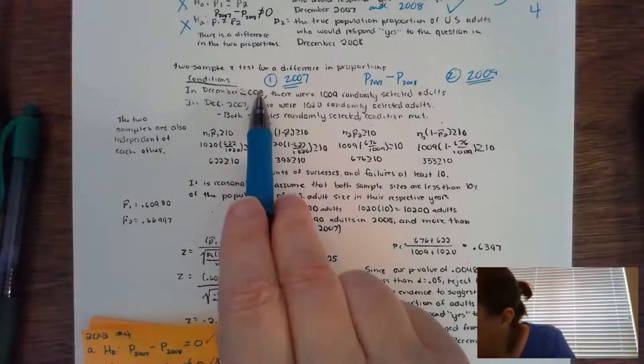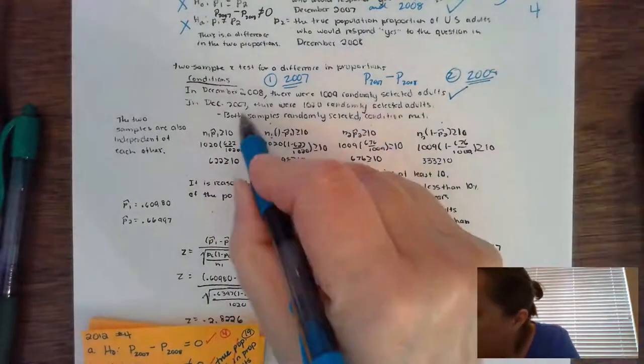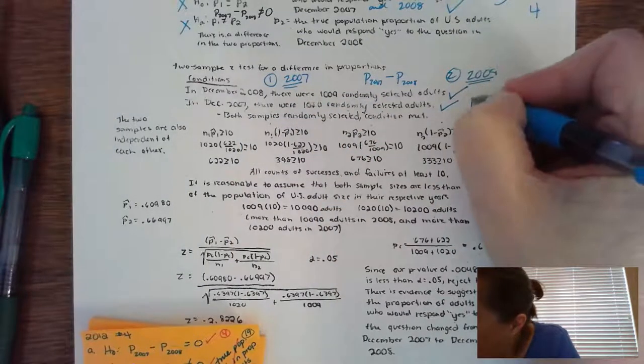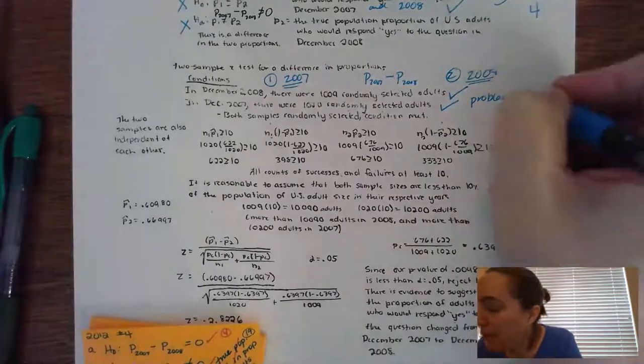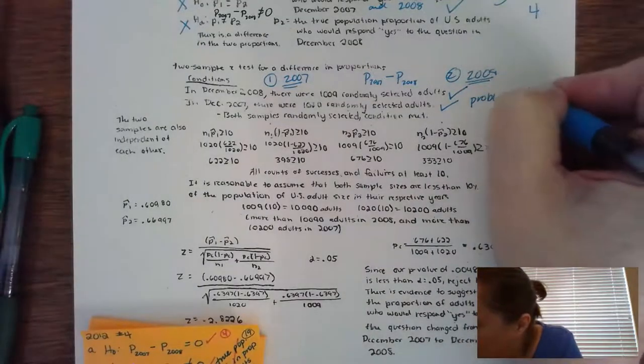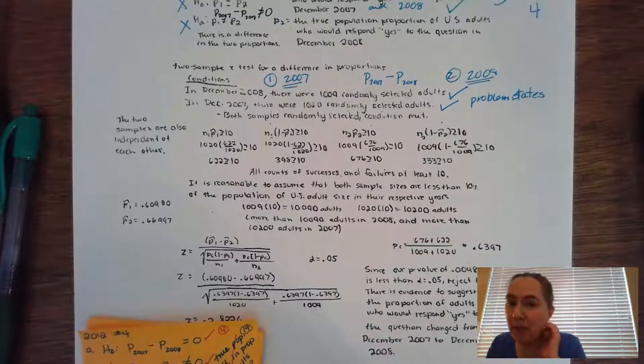So it says in 2008, randomly selected adults, check. 2007, randomly selected adults. I would write down the problem states that the adults were selected randomly, just to make sure it's very, very clear to the AP reader that you see that.